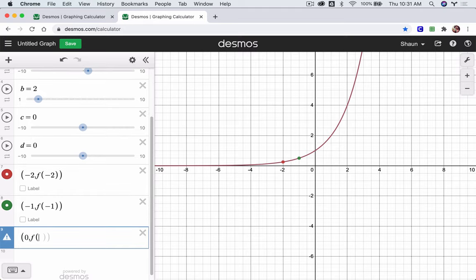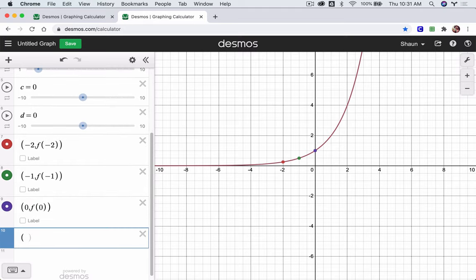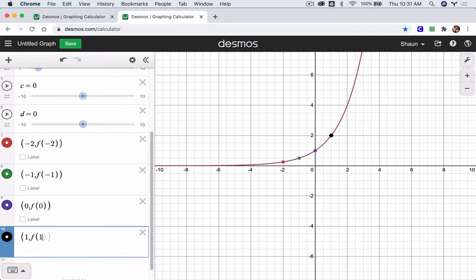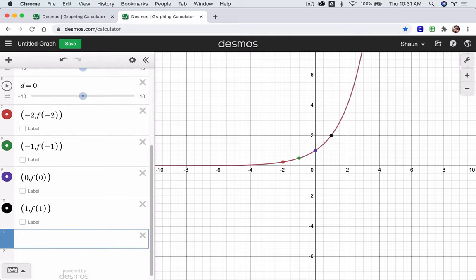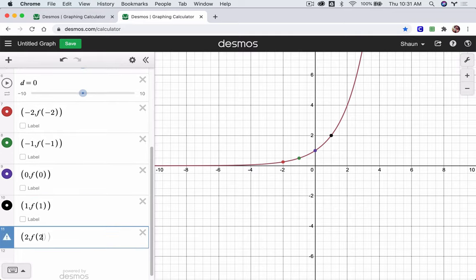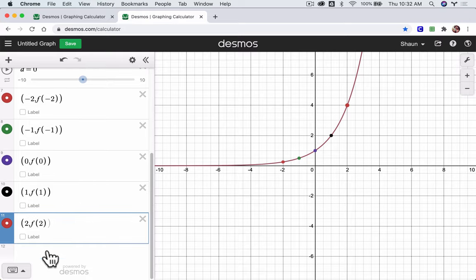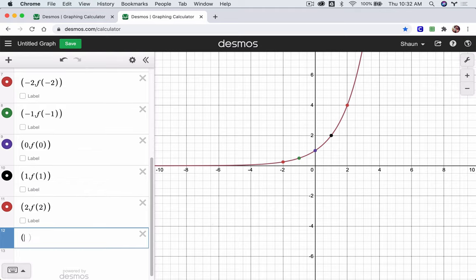And then I go 0, f of 0. And then 1, f of 1. You see the points popping up in the graph. And then 2, f of 2. Okay. So now I've got those points set up. And I want to do the same thing for g. Because g will be different.